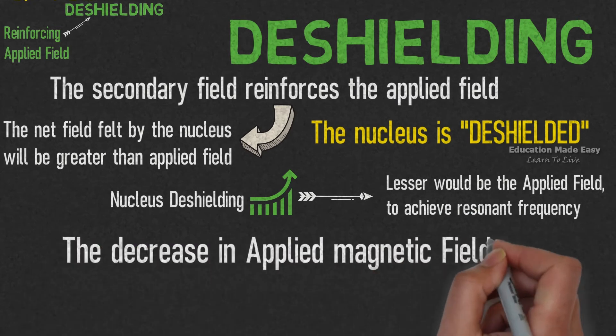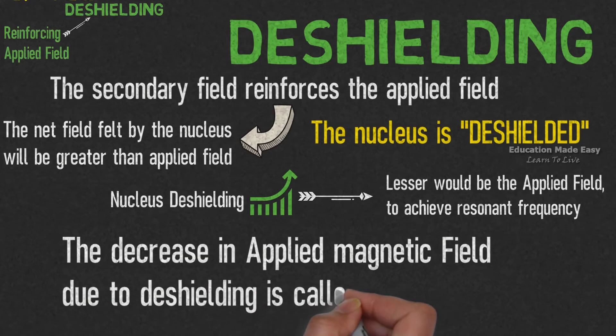This decrease in applied magnetic field due to deshielding is called downfield shift.